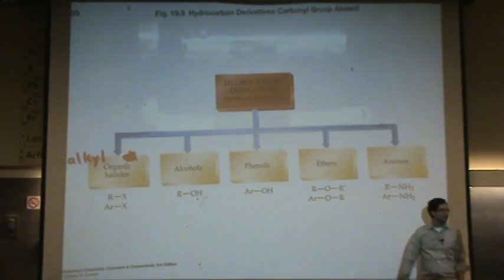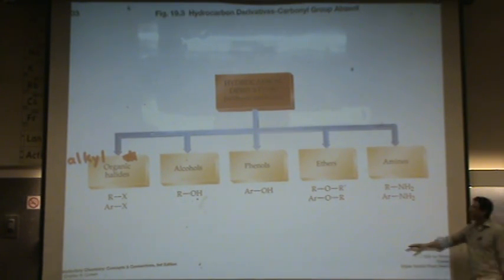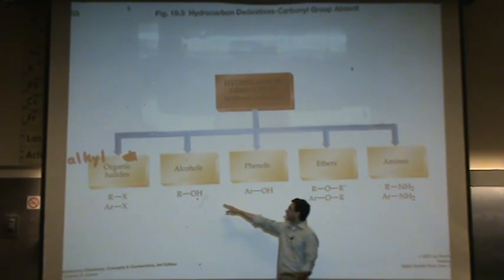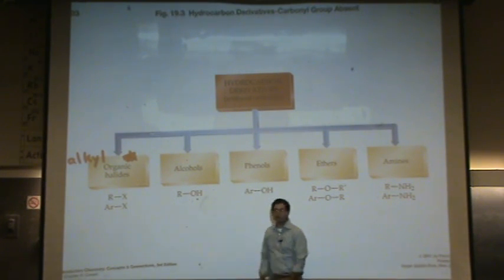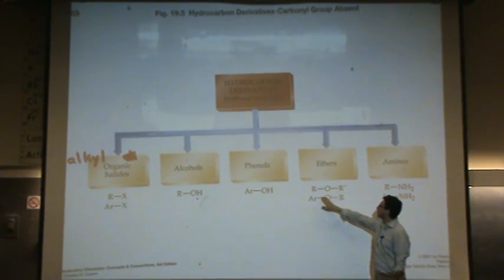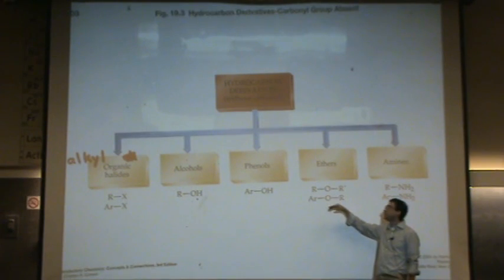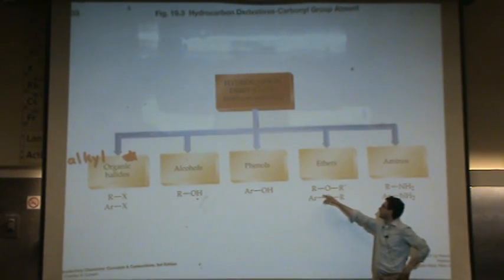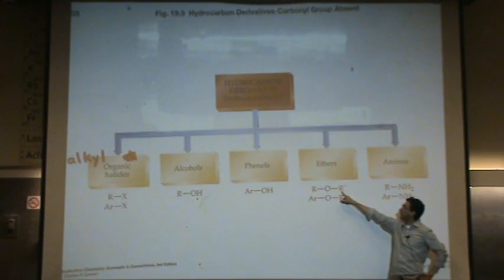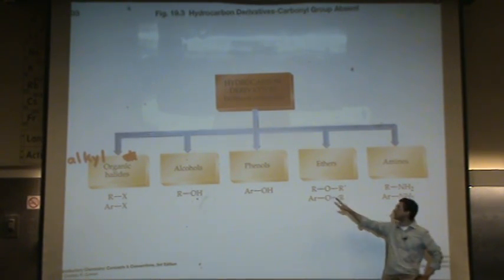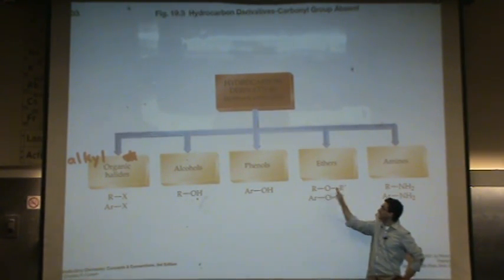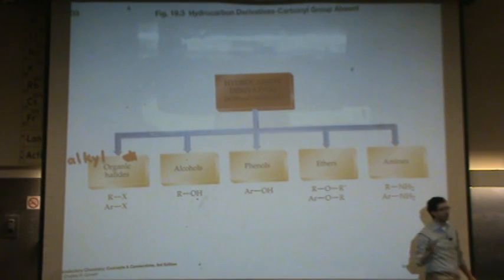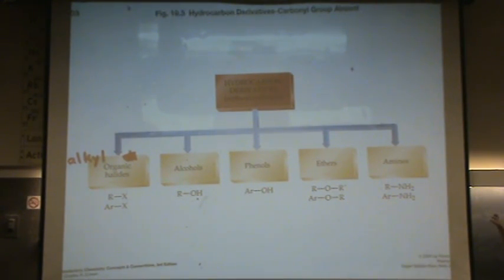Ethers. An ether is where you have an oxygen, kind of like an alcohol, but in the middle of the organic. So if the oxygen's in the middle, whether there's arenes or just regular organics. And notice here, there's an R and an R prime. R prime just means the left-hand side and the right-hand side could look different, or they could look the same. So if there's different R groups, which are organics, and there's oxygen in the middle, that's called ether.